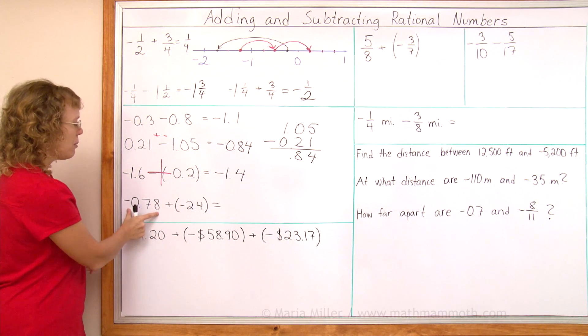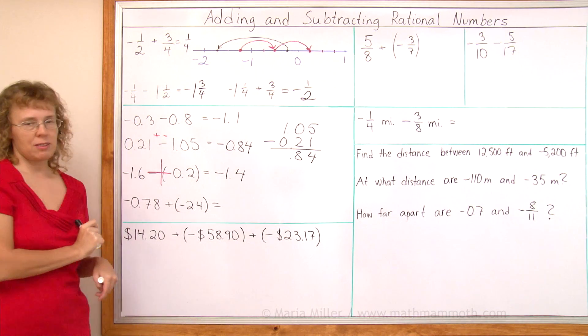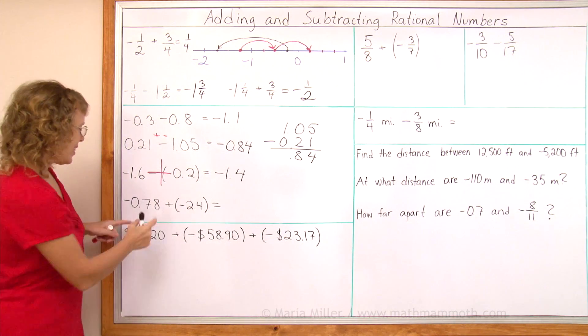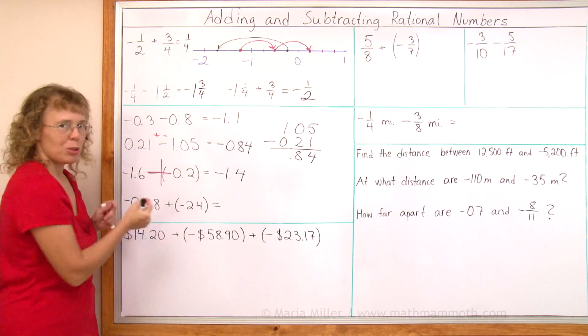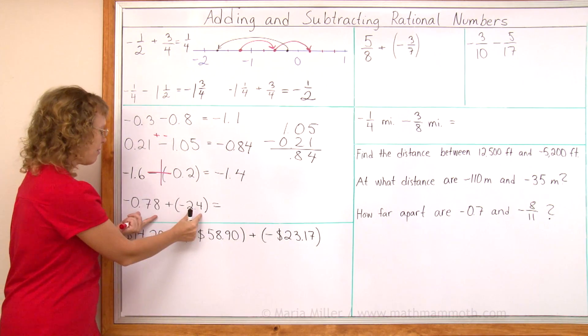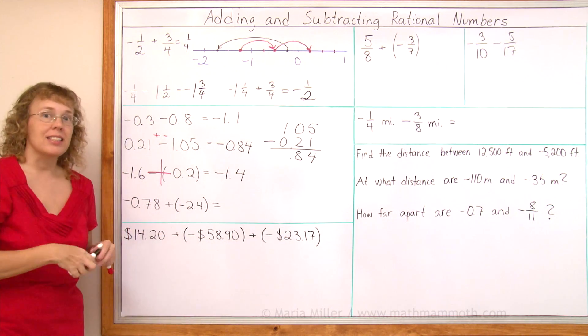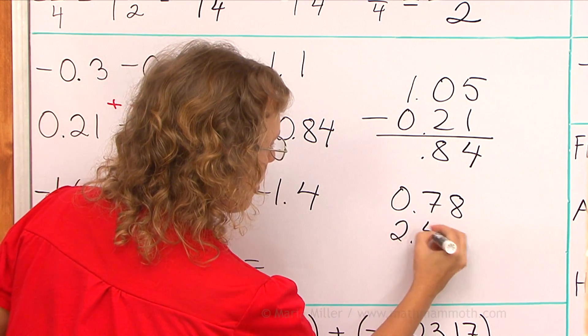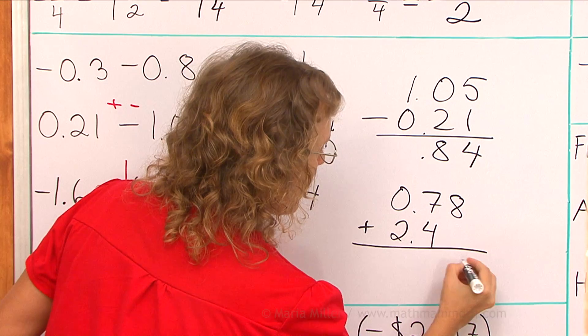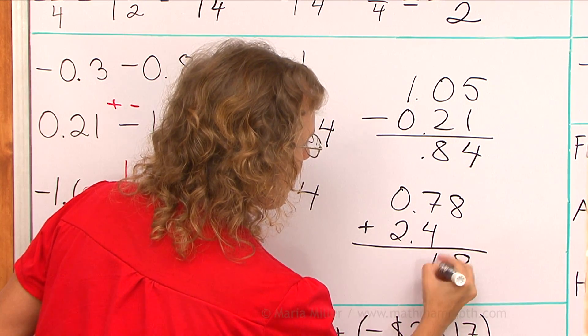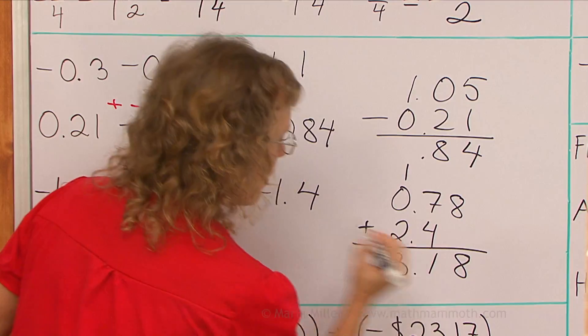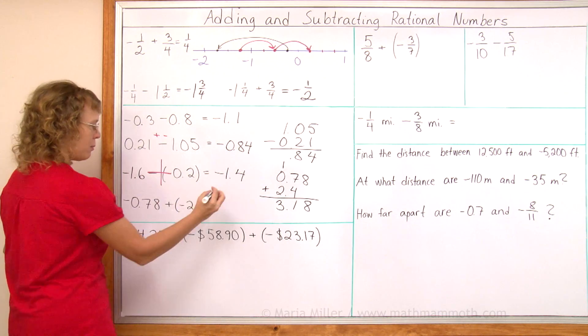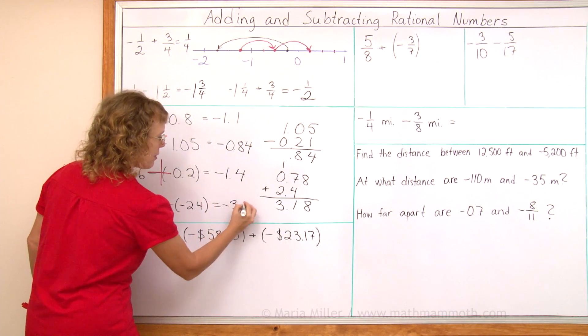We have a negative number, and we add more negatives. So all we need to do is add the plain numbers, or add the absolute values and take the whole answer as negative. And add 2.4 here. So we get 3.18, but it's all negatives.